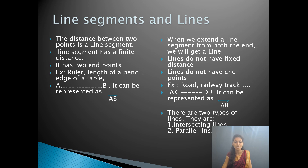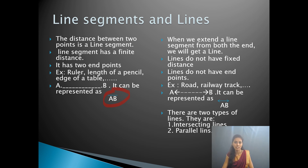A line segment has two end points. How can we represent it using figures and letters? The end points are written at each end — AB is a line segment. But when it comes to a line, there is no end. Even without a given statement, based on the representation, we can directly say whether it is a line segment or a line.